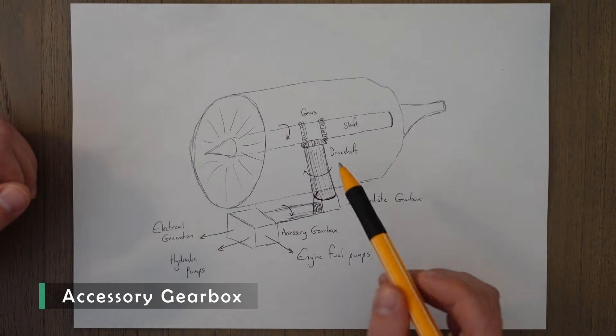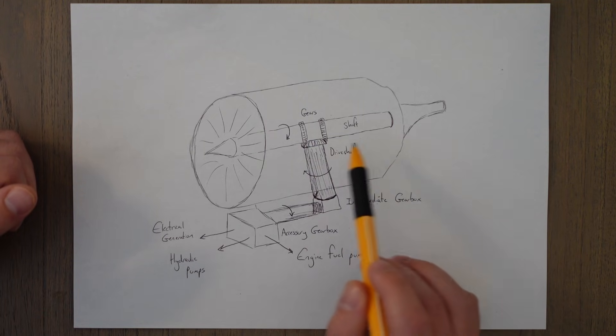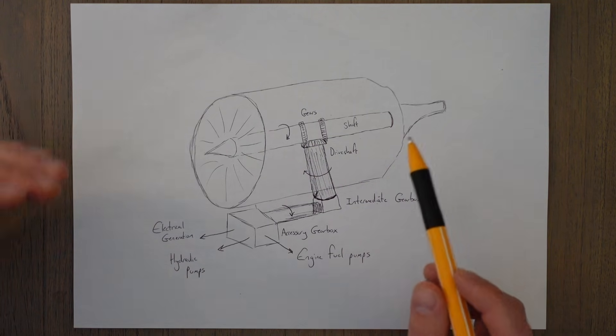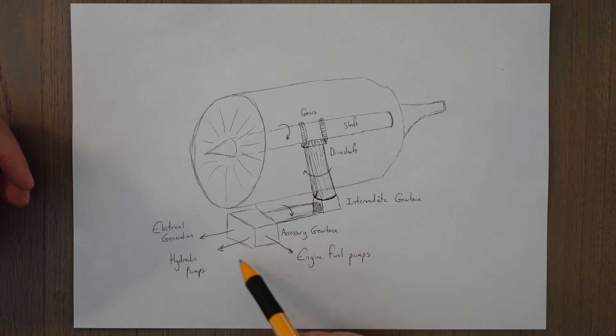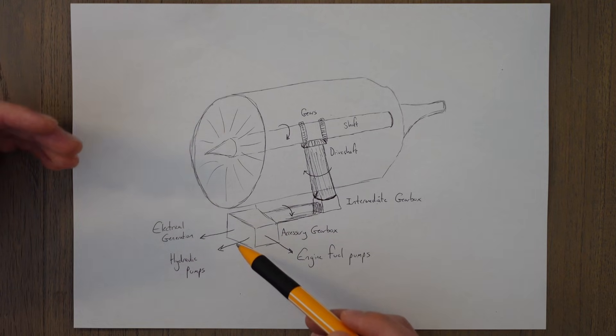The accessory gearbox is used to draw power away from the main shaft of the engine to power various other pumps and systems. Things that run off the accessory gearbox are things like engine driven fuel pumps, oil pumps, hydraulic pumps, and a system for generating electricity.